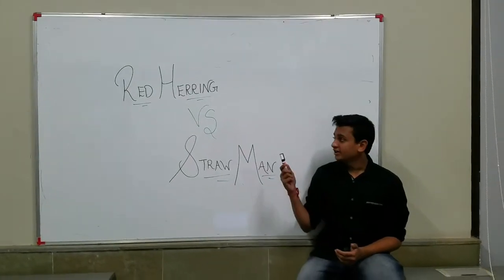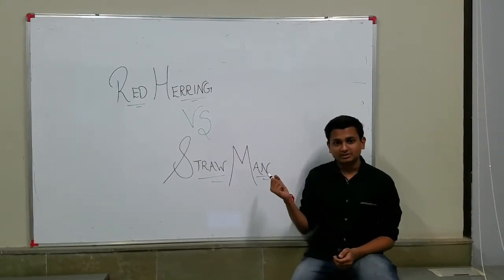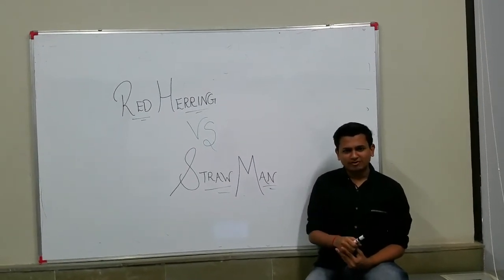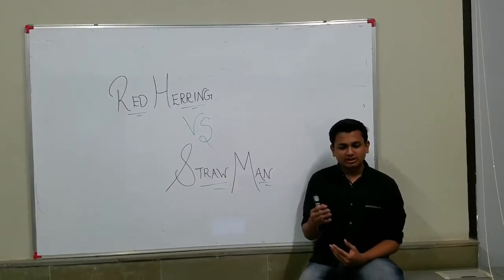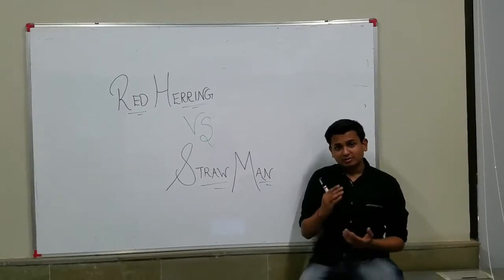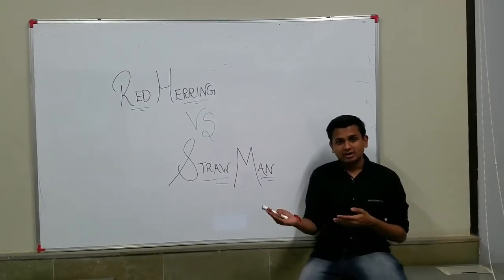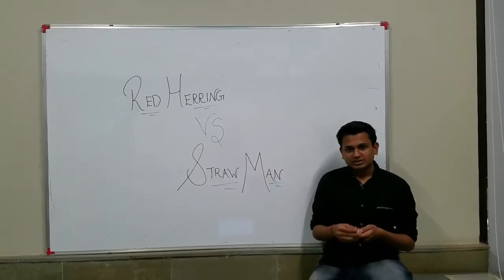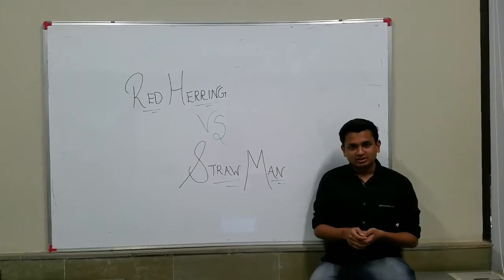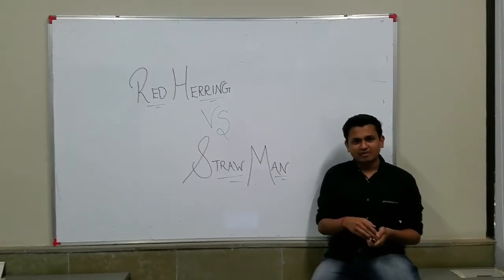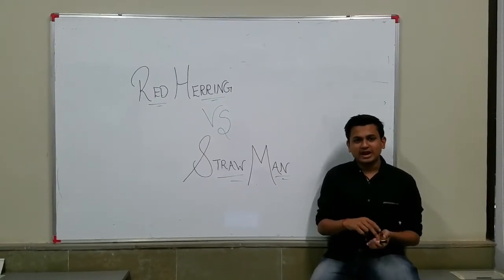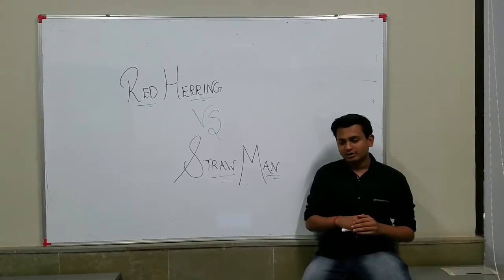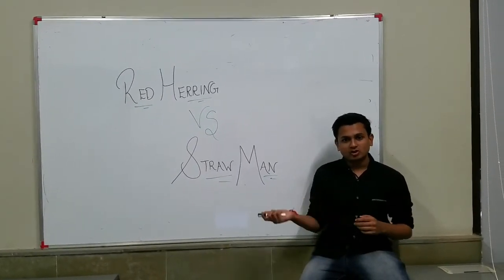Many times the Red Herring fallacy is confused with the Straw Man fallacy. So what is the Straw Man fallacy? The Straw Man fallacy is a common form of argument — an illogical and informal fallacy where a misrepresentation of the opponent's argument is created and then refuted in order to win an argument. Even though it seems fine on the surface, it is still a fallacy. I would now like to show you a video explaining the Straw Man fallacy.